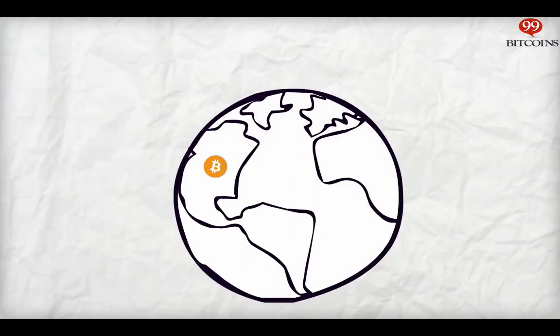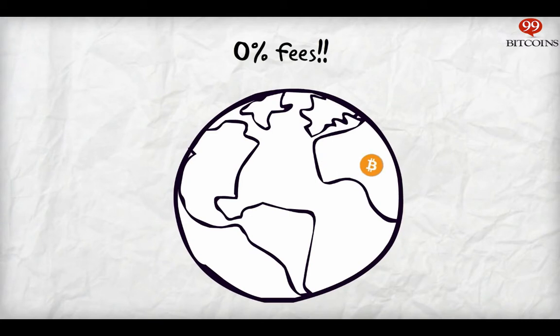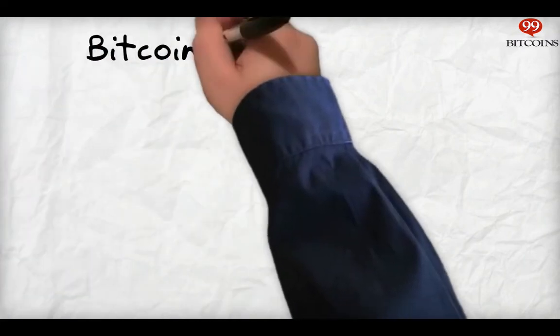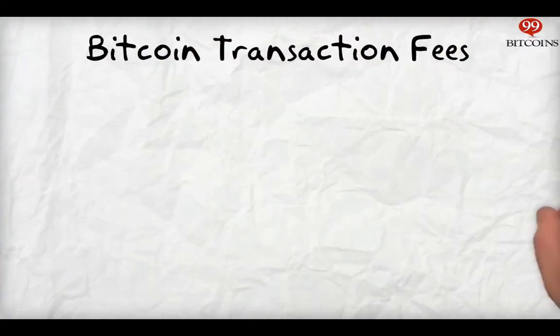One of the major advantages of Bitcoin is that you can supposedly send money between any two points on Earth for free. But if you've sent Bitcoins once or twice before, you've probably noticed that there are in fact transaction fees. What's going on here exactly? Before I explain how the fees are calculated, I want to explain what Bitcoin fees are.